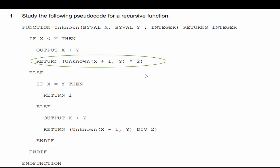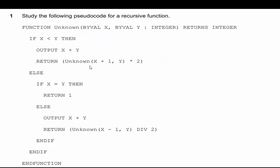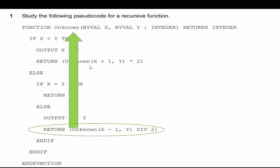What is a recursive function? It's a function that calls itself. I'm in the 'unknown' function, and inside this function I'm calling the 'unknown' function again. A recursive function is an alternative to a loop. Further down the page I see another return statement that also confirms this is recursive.